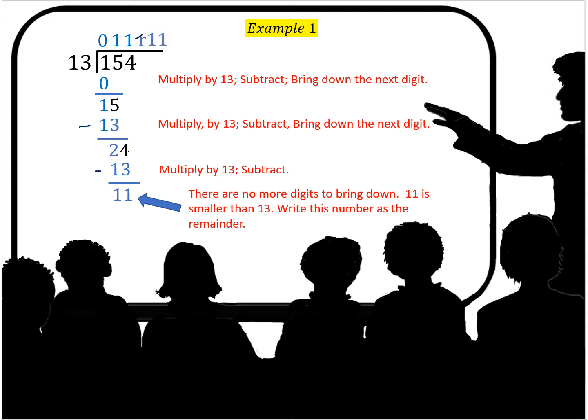So we multiply by 13, we subtract. There are no more digits to bring down. 11 is smaller than 13. So you're going to write that number as the remainder. The answer is 11 remainder 11.